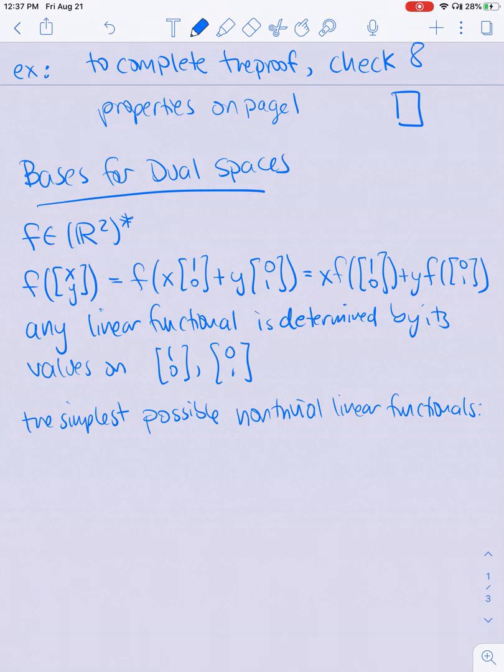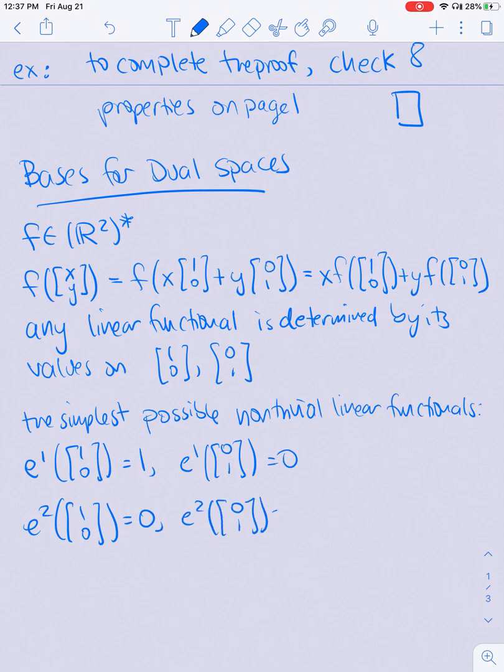So I'm going to define E¹ to take the vector (1, 0) to 1 and the vector (0, 1) to 0, and E² to take the vector (1, 0) to 0 and (0, 1) to 1. And it turns out that these form a basis for R² star, which is dual,